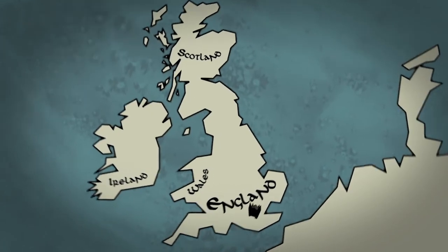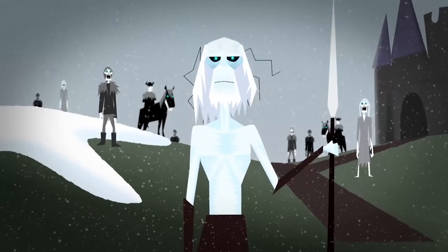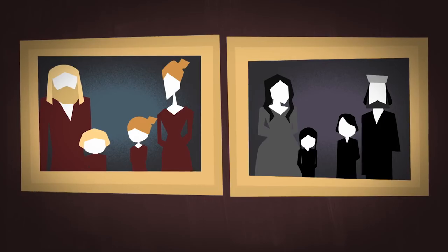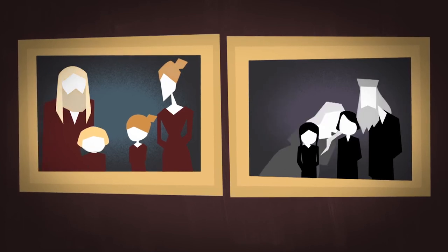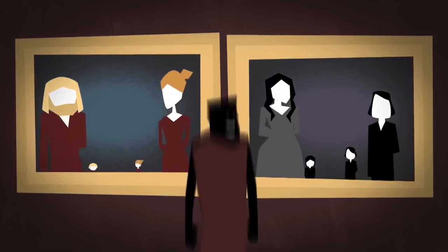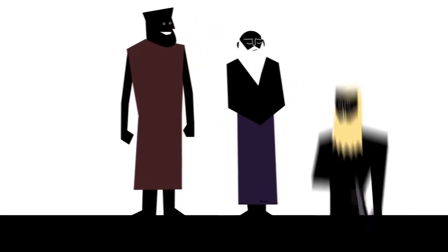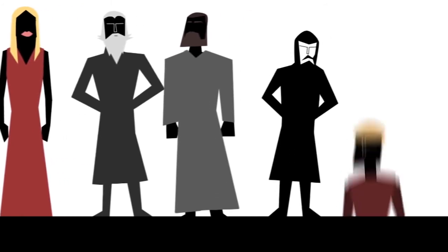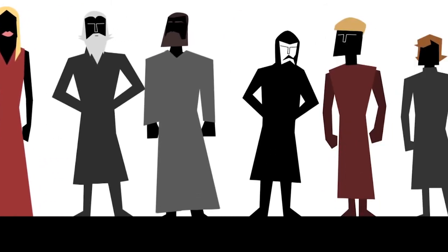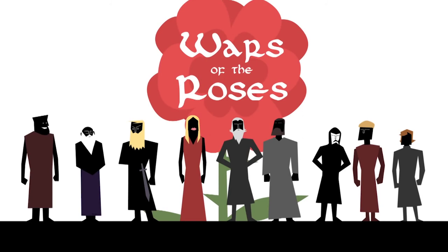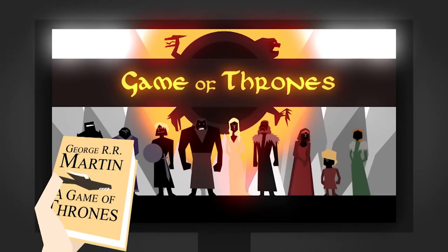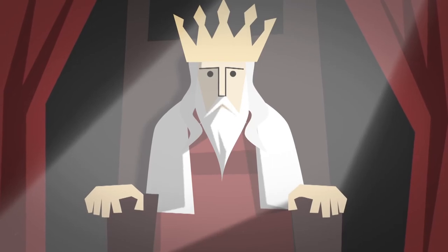As far as we know, medieval England was never invaded by ice zombies or terrorized by dragons, but it was shaken by a power struggle between two noble families spanning generations — involving a massive cast of characters with complex motives and shifting loyalties. If that sounds familiar, it's because the historical conflicts known as the Wars of the Roses served as the basis for much of the drama of Game of Thrones.